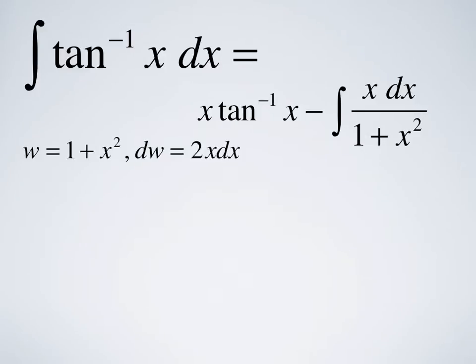This integral on the right is pretty easy to do using substitution, and since we're already using u and v, we'll call the new variable w. So we have w equals 1 plus x squared, so dw would be 2x dx, which we almost have up there. So we're going to solve for x dx, which is in the integral, and we get 1 half dw.